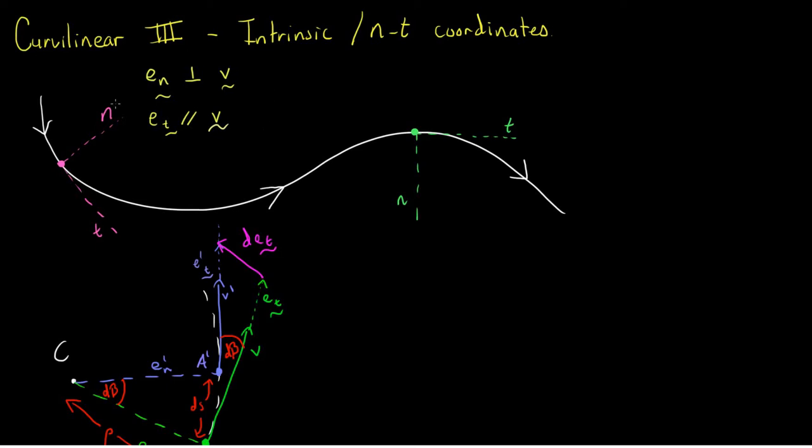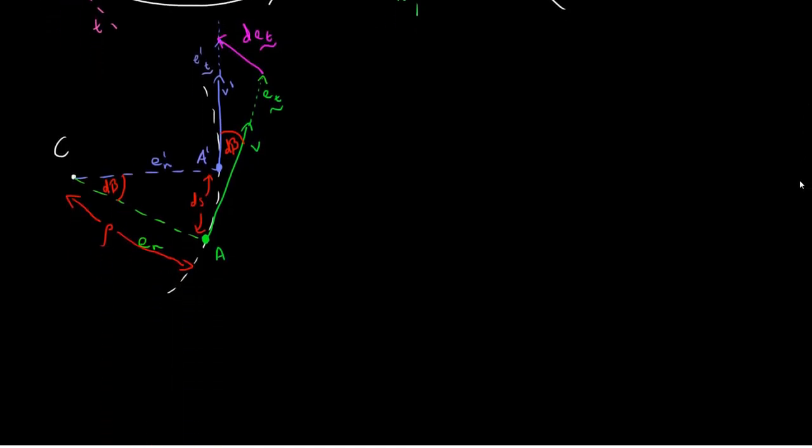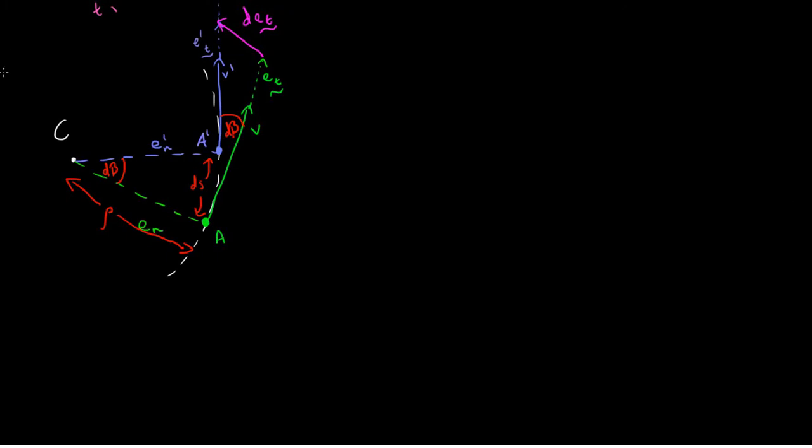Now whenever we describe any kind of motion, we want to have equations that describe this motion, and so if we look at this diagram here, we should be able to derive the equations of motion for velocity and acceleration.